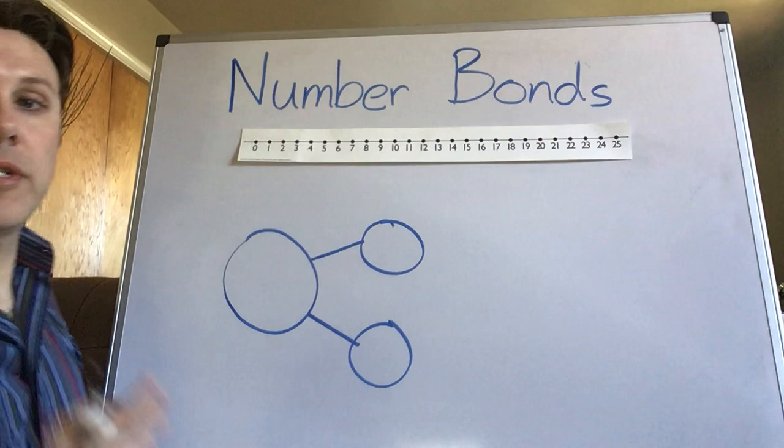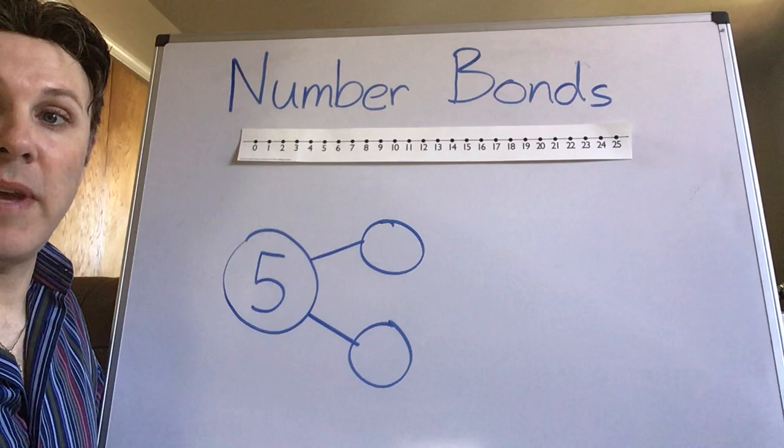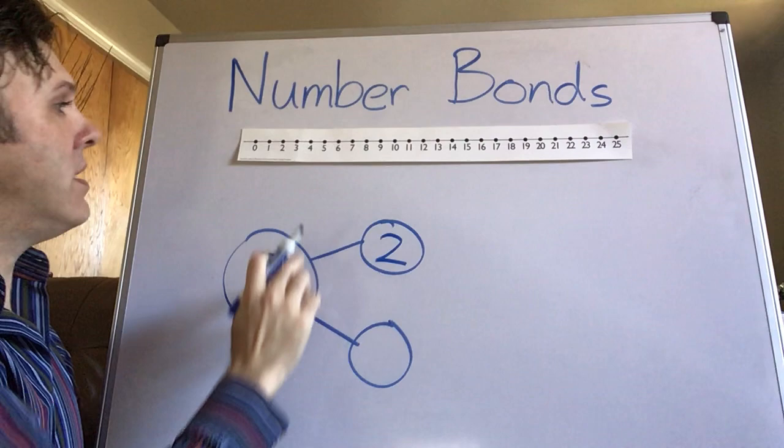So for example let's make five our big number. So if we need to figure out what two numbers make five I'll give you one. So here's number two.